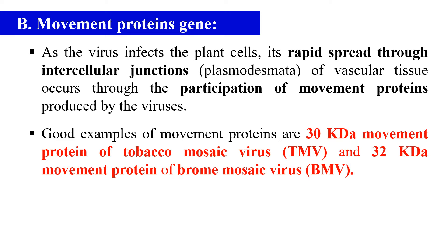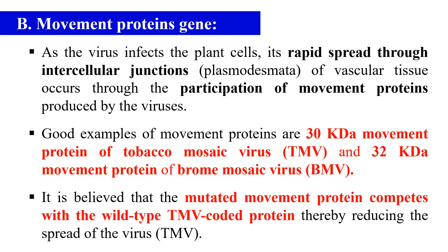If we transfer the genes for these movement proteins we can make the plant resistant against the virus. Specifically, we can transfer the mutated movement protein genes, and when transferred to the plant they will give protection against the virus. For example, the mutated movement protein transferred to the plant against the wild-type TMV coat protein will reduce the spread of the TMV virus.